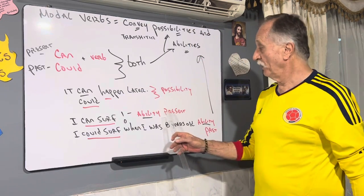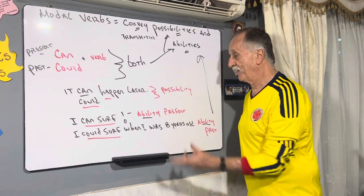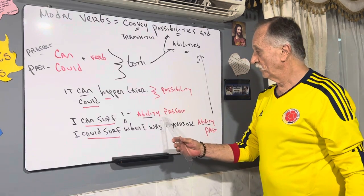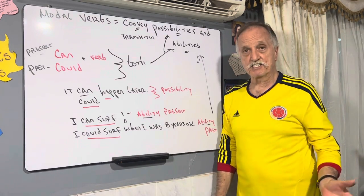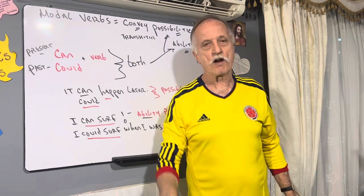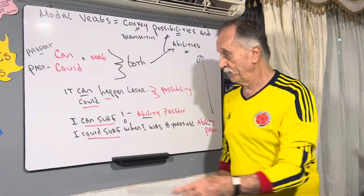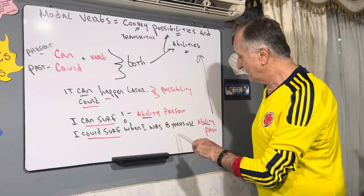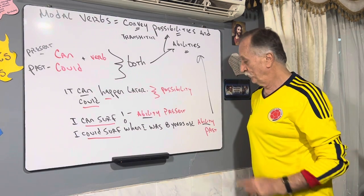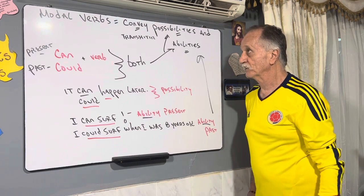Now you have abilities also. Can and could express habilidades. I can surf — that's the ability right now, I can surf, I love to surf. I could surf when I was eight years old in Miami. I lived in Miami. That's ability from the past; ability from the present.